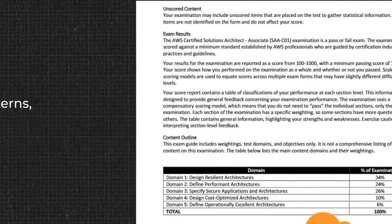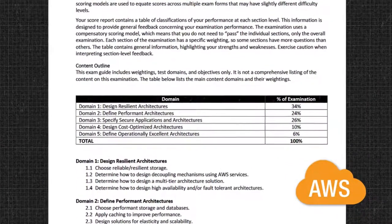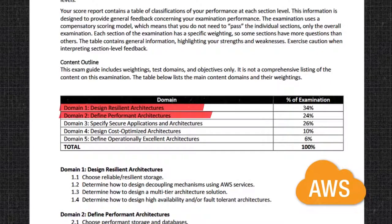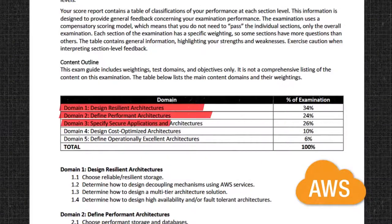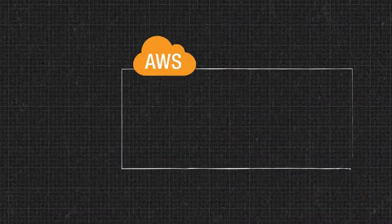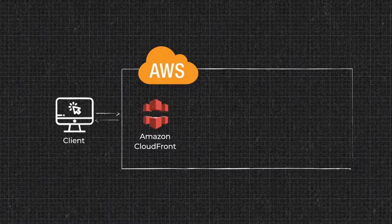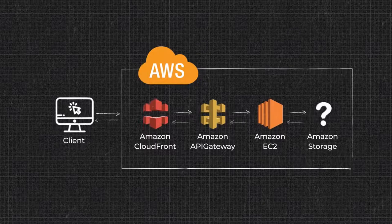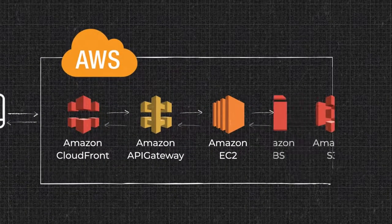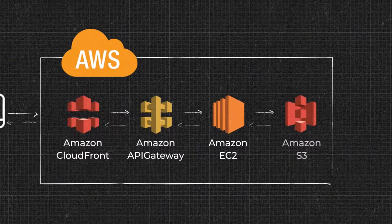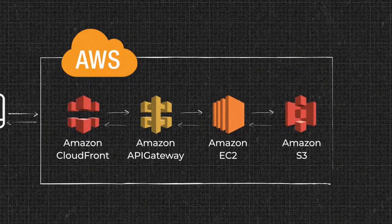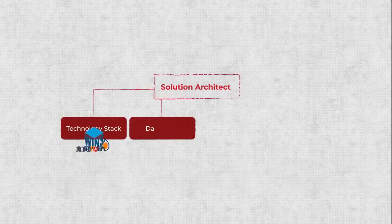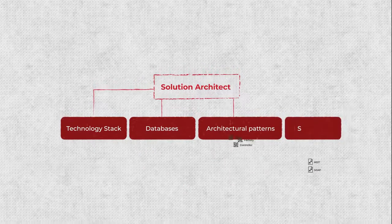If you look at the Amazon Web Services certification exam guide for solution architects, you'll get the idea of the problem domains this person faces: designing resilient architectures, defining performant architectures, specifying secure architectures, and so on. For example, an architect building an AWS-based system may need to decide which Amazon cloud service to use if the client's salespeople upload their sales figures daily and need a durable storage solution that also protects against users accidentally deleting important documents. The selection of specific technologies isn't limited to cloud services only — an architect decides technology stack, databases, architectural patterns, standards, and more.